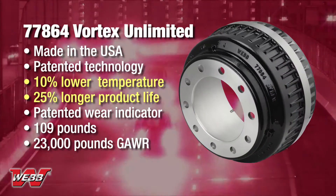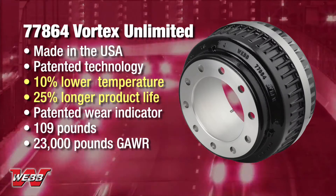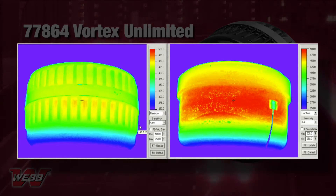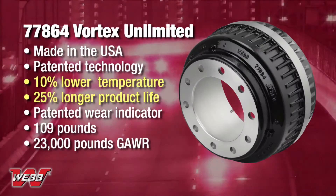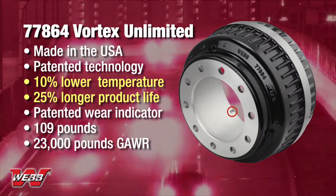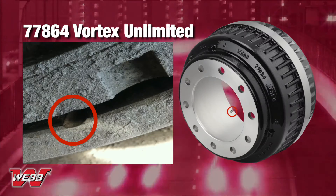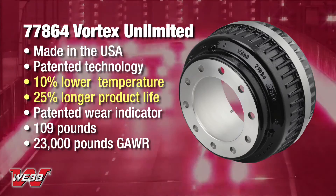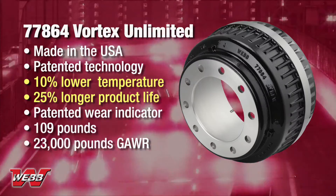If you want 25% longer product life cycles, premium performance, and lower maintenance cost, the Webb Vortex Unlimited brake drum is right for you. Using patented Vortex technology, this robust brake drum is structurally comparable to the standard 66.8-64, but the operating temperature is 10% lower for increased drum and lining life. In addition, this innovative drum is offered with Webb's new patented wear indicator, which further decreases maintenance costs by taking the guesswork out of wear measurements. This feature allows you to visually and physically determine if the drum has reached its maximum wear diameter, even while the drum is installed. The Webb Vortex Unlimited is ideally suited for the same applications as the standard 66.8-64, but it runs 10% cooler and lasts 25% longer.